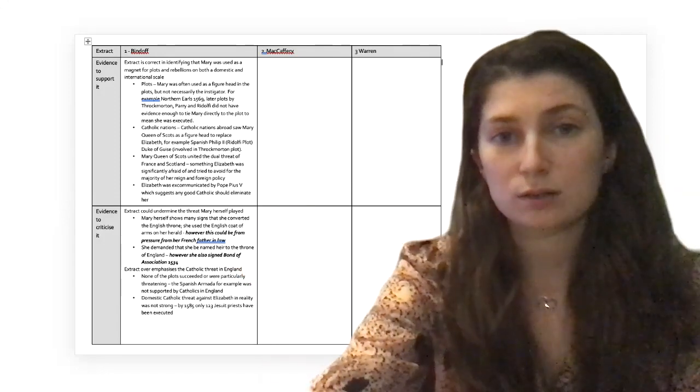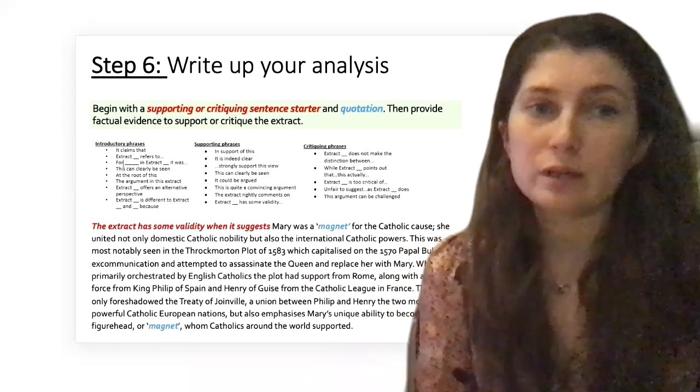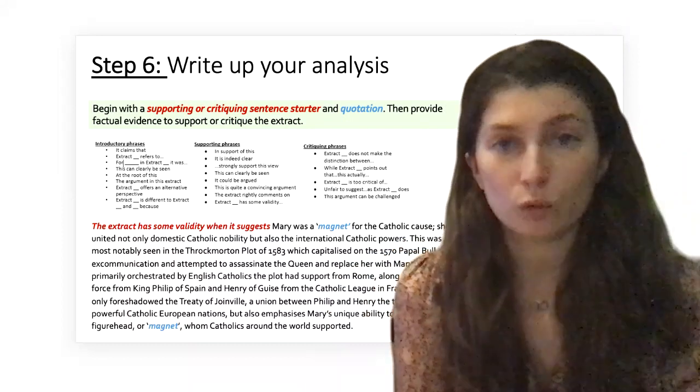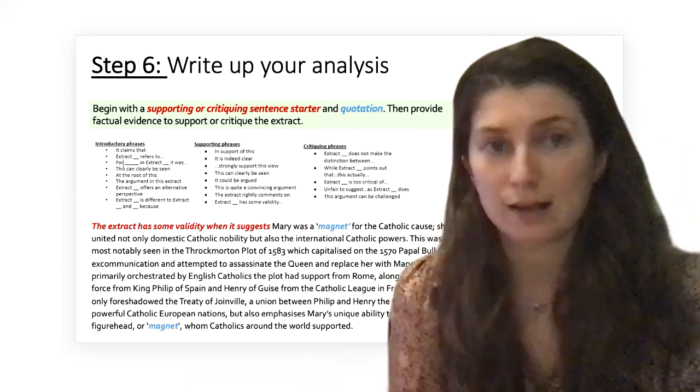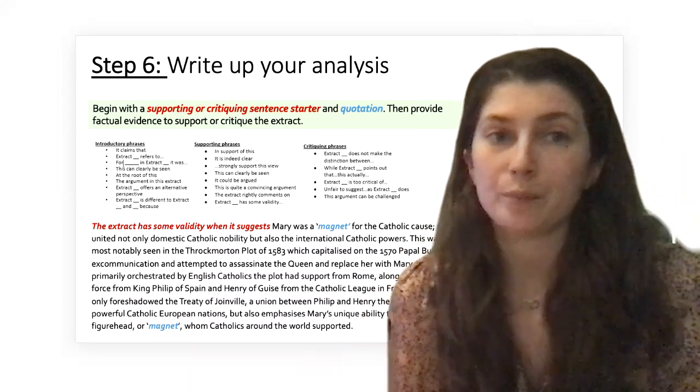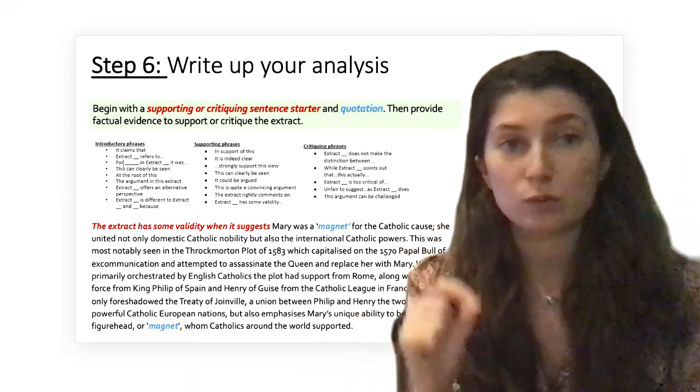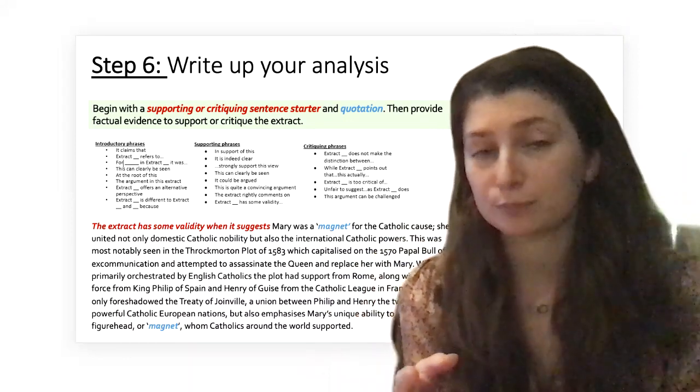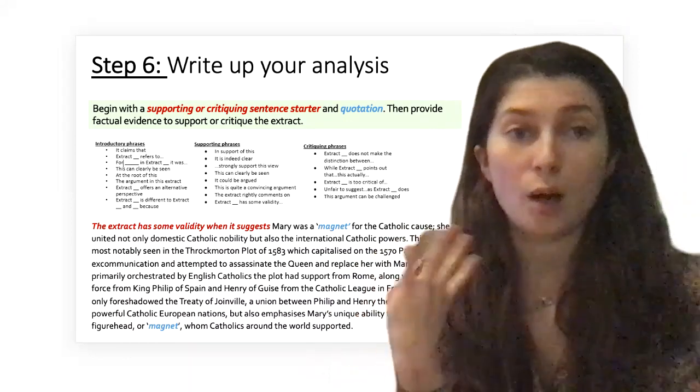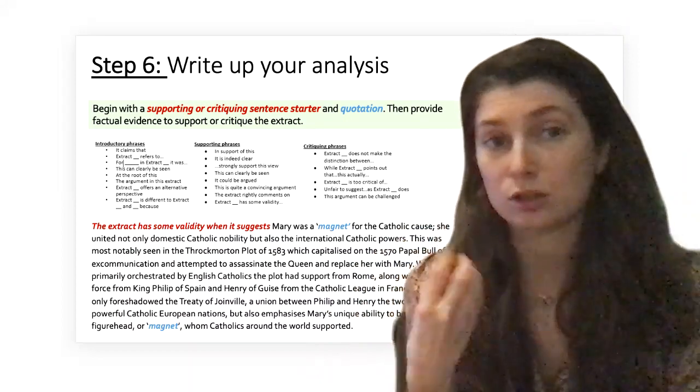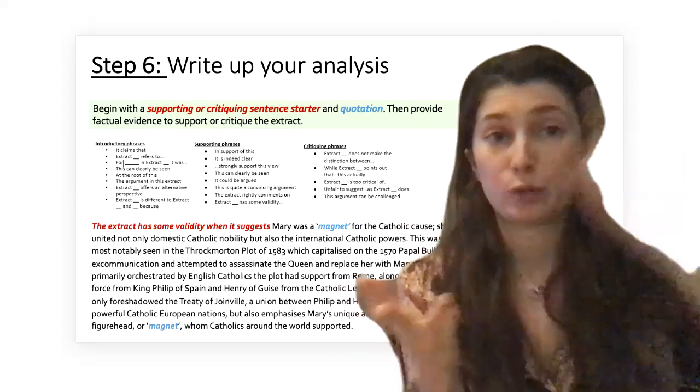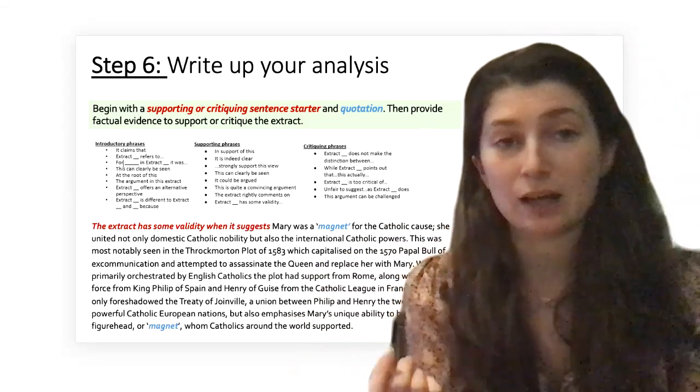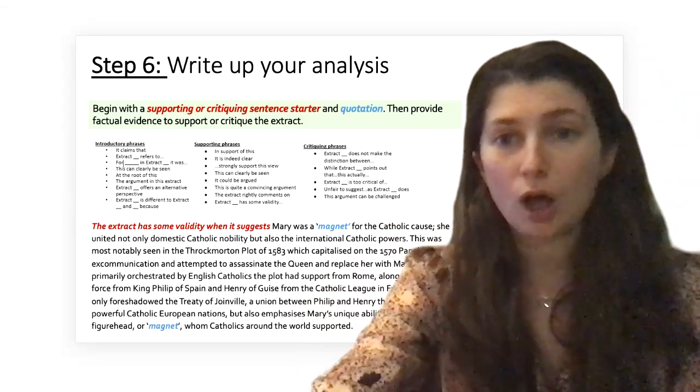Finally, we've already written our summary into the introduction to the extract paragraph, and now we have all our information. Step six is to write your analysis and evaluation. I want you to see those sub-points as mini points within the paragraph and try to cover two or three depending on how much time you have. I think you should always open with a fitting sentence starter that suggests immediately to the examiner whether you are supporting or critiquing the extract. After that, make sure you include a quotation to again show you are engaging with the extract itself.